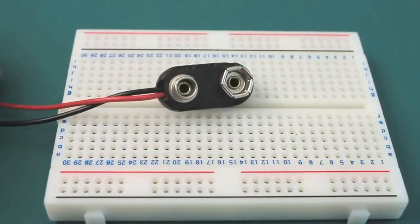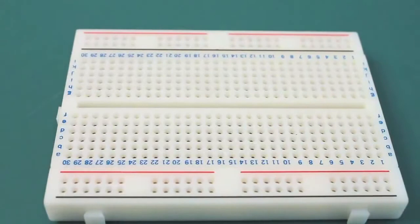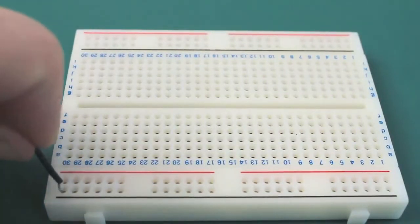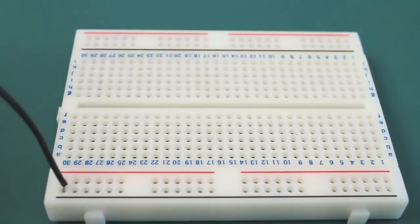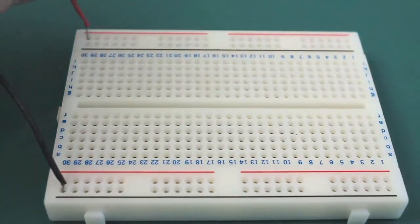One of the first things to do when creating a breadboard prototype circuit is connect a power supply. To do this, put the black or negative lead in the black side and the red or positive lead in the positive side.